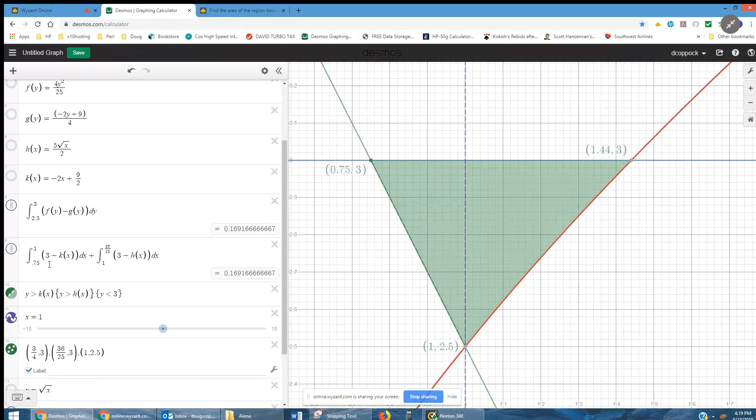If I integrate with respect to x, I'm going from 0.75 to 1, but I'm taking 3 minus k of x. K of x is the linear equation solved for y in terms of x, plus the integral from 1 to 36 25ths, which is the point of intersection of the 5 radical x over 2 and the line y equals 3. And I'm taking top minus bottom, 3 minus h of x. And you can see you get the same answer.